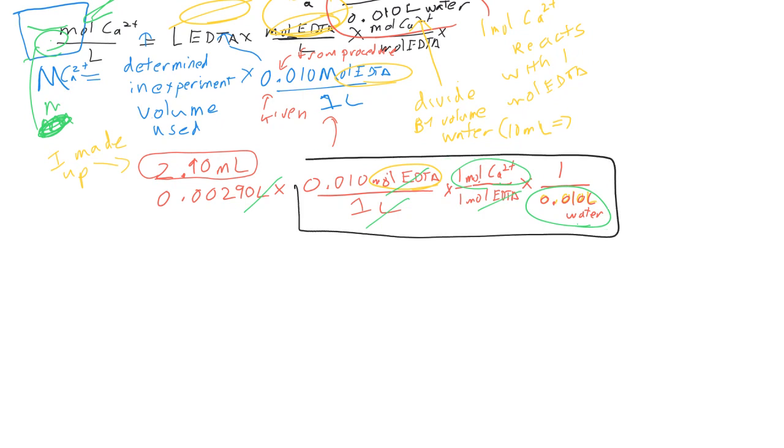this is the same for everybody. So what you're really doing is you're calculating your moles of calcium per liter by taking the volume of EDTA used in the experiment in units of liters, then you're going to multiply by 0.010 and then you're going to divide by 0.01 liters.